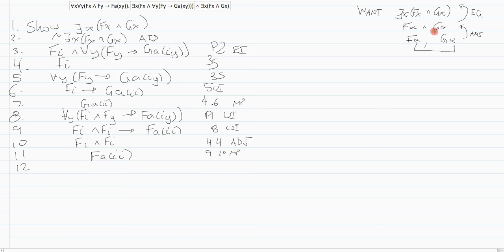Now I modus ponens I get faii and that is nine ten modus ponens. On line 12 now I can start going backwards.